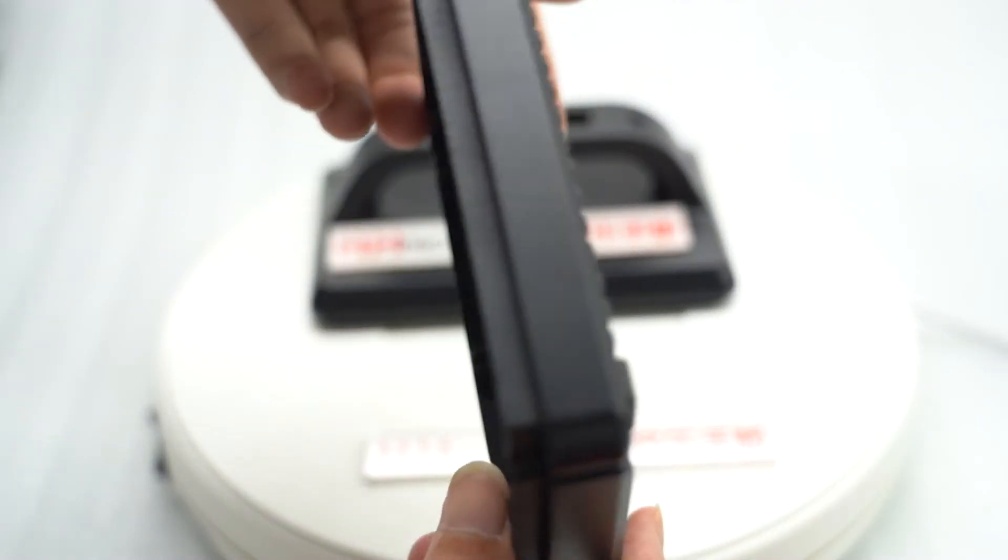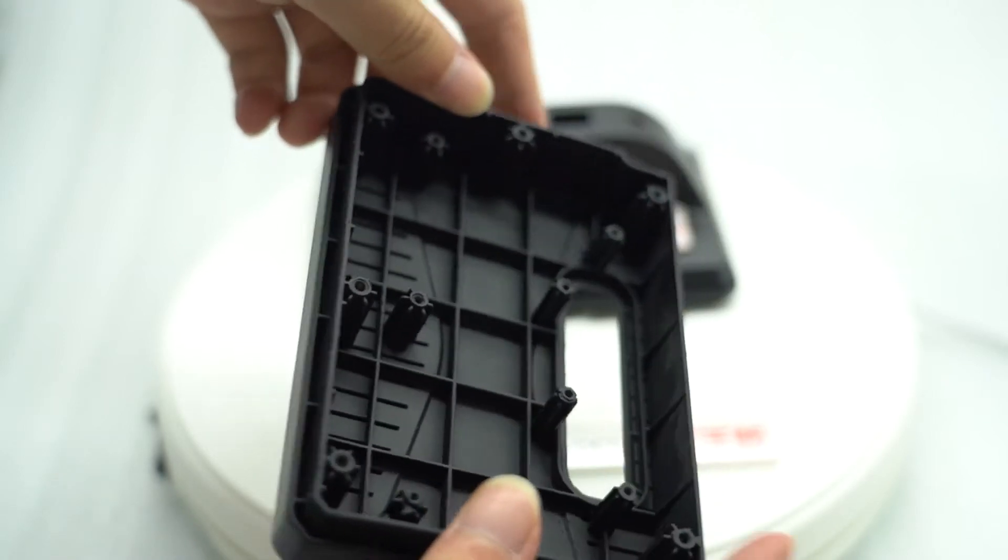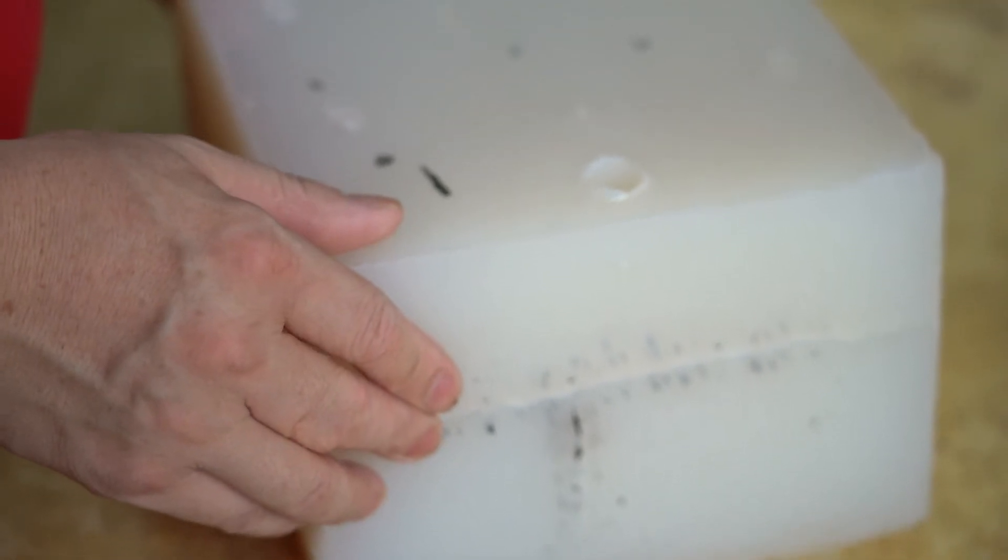PU resin is then poured into the cavity to create a production-like replica. On average, silicone molds can last around 10 runs depending on the part.